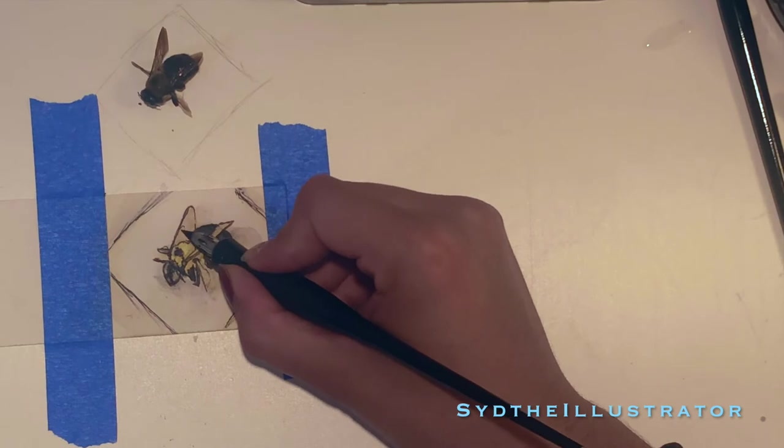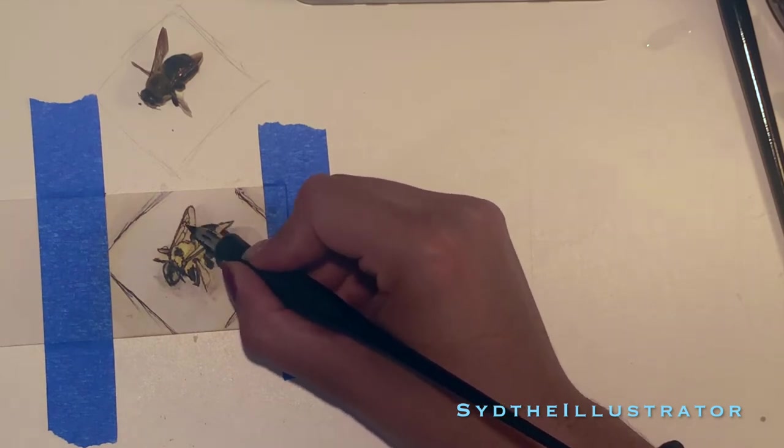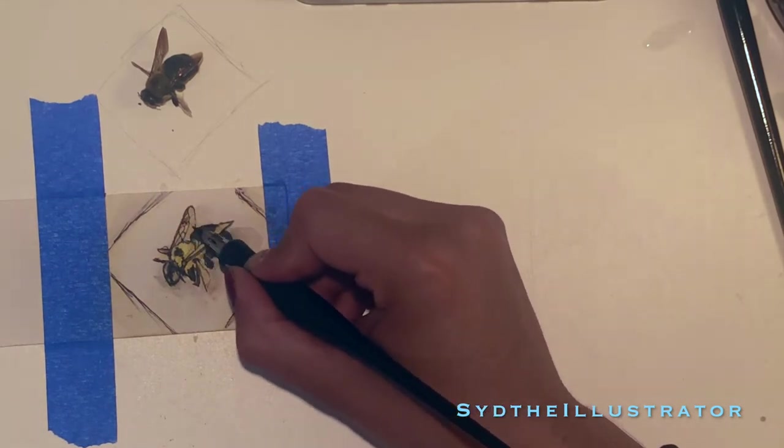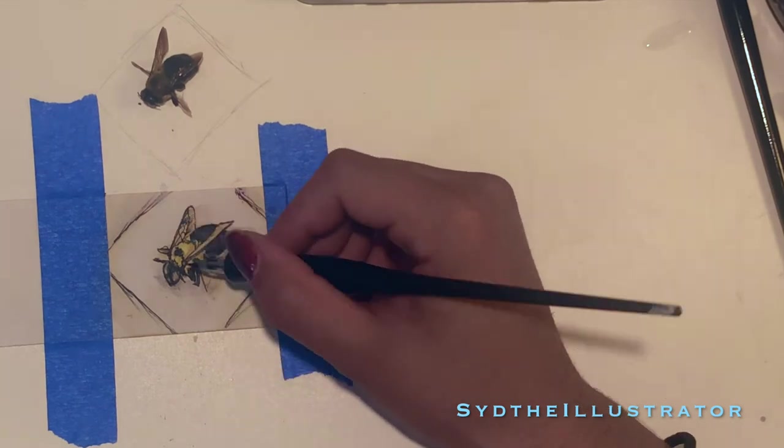Right there I did some stippling to help define the head from the rest, and here I'm adding details to the wings. This was a lot of fun - it just brings such life to the creature, I think.